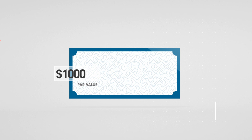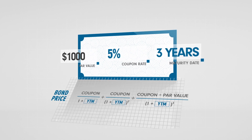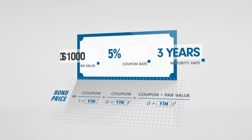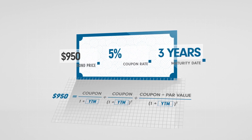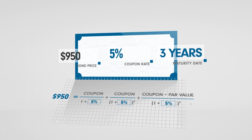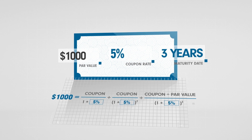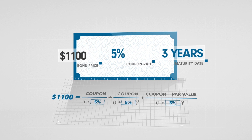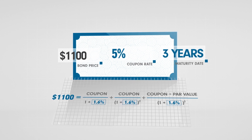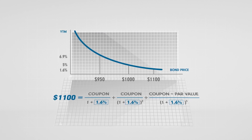Let's again look at our bond with a par value of $1,000, 5% coupon rate and 3 years to maturity. If you buy this bond at $950, your YTM would be 6.9%, higher than the 5% on offer if you bought it at par value of $1,000. If you buy it at $1,100, the YTM would be 1.6%. As you can see, the lower the bond price, the higher the YTM.